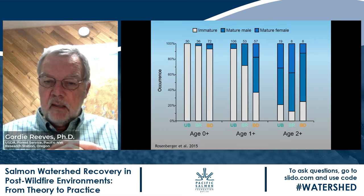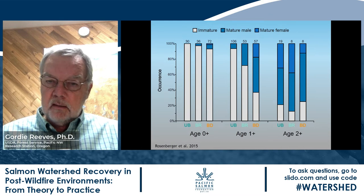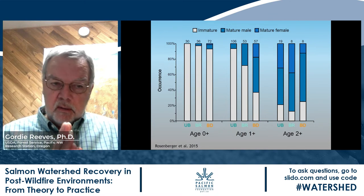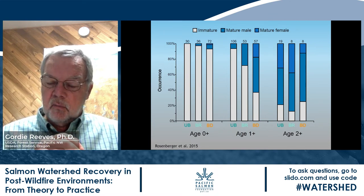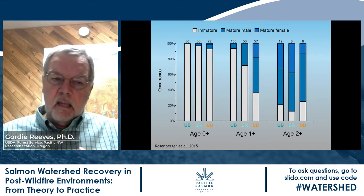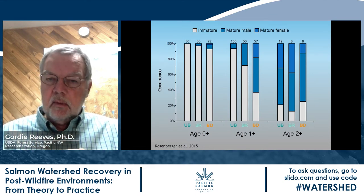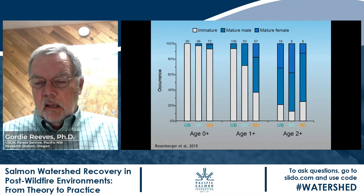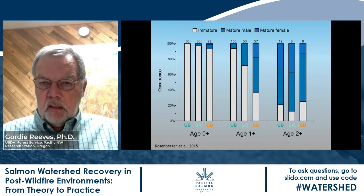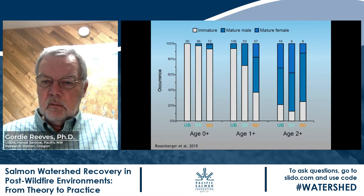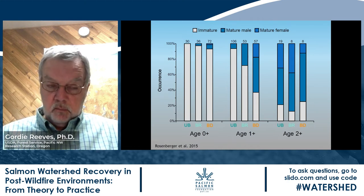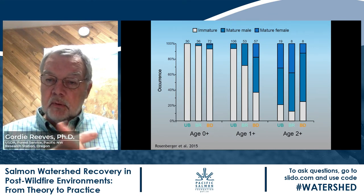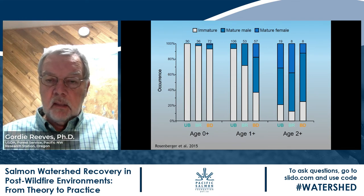The same study looks at age of maturity and shows that in fire-affected systems, fish are becoming mature earlier and at larger sizes. This is a reflection of adaptation — in a highly dynamic environment, you want to be able to reproduce as quickly and as effectively as possible. Both males and females in the most disturbed systems show the fastest response. This is one of the mechanisms that allows these fish to persist through very dynamic events.